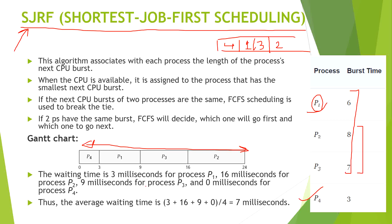Let's compute the waiting time for this SJRF example. Process 1 is executing after 3 seconds of arrival, so its waiting time is 3 seconds. Process 2 has to wait till 16 seconds to take the execution handle, so the waiting time is 16 seconds. Process 3 will wait 9 seconds to start execution. Process 4 doesn't wait at all — it starts as soon as it arrives. Taking the average of these waiting times, we get 7 milliseconds as the average waiting time.